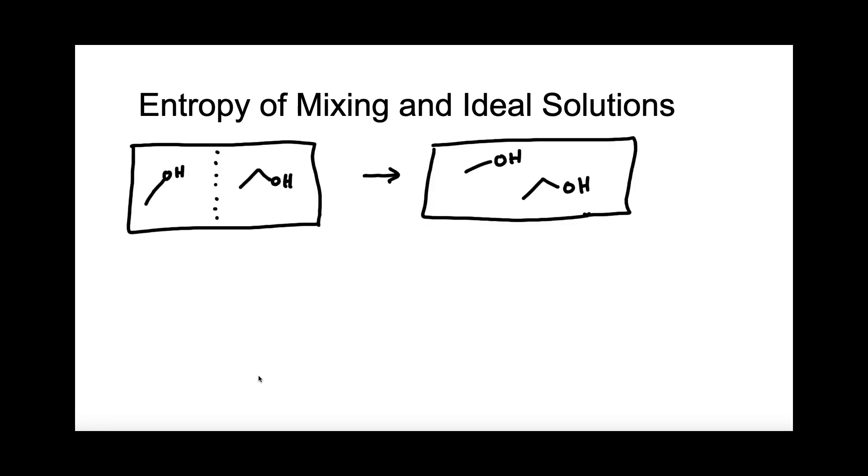Let's start by looking at a very simple case. We can imagine a container with methanol on one side, and then a divider, and some ethanol on the other. We pull out the divider. We know what's going to happen - the two liquids are going to mix. And so the question is, why?